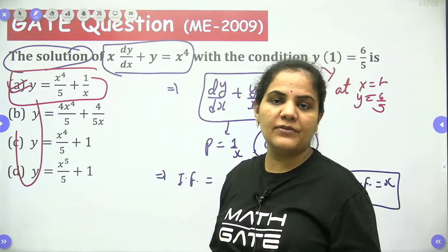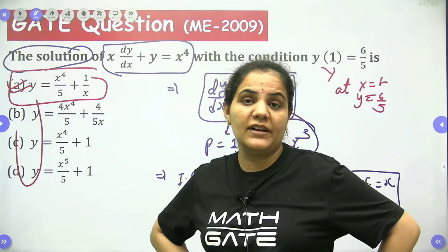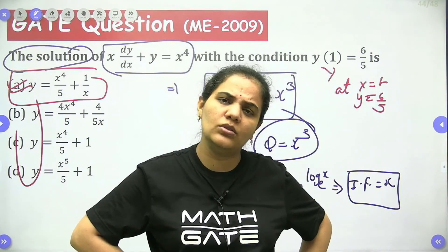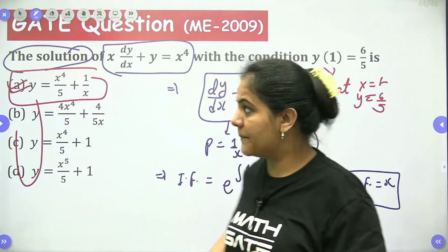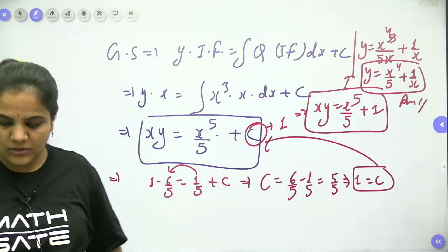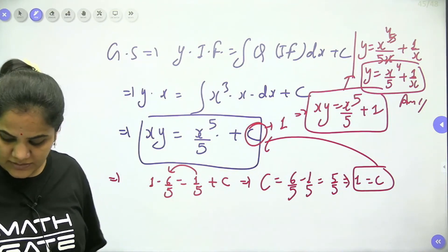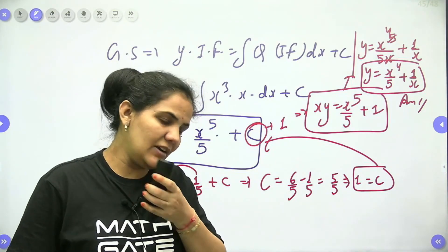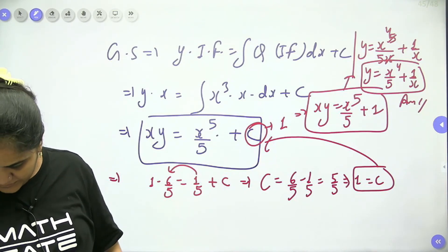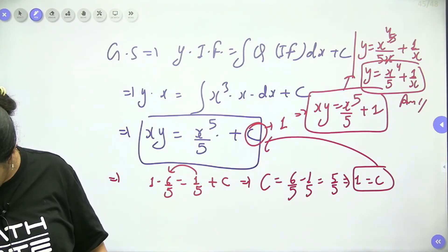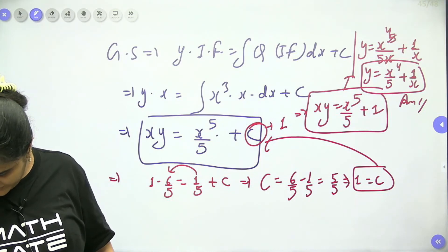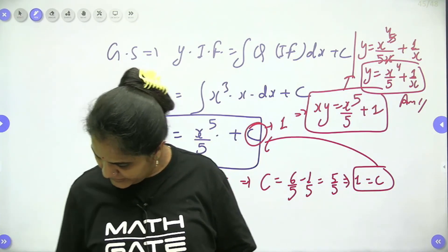I think you are feeling comfortable with linear and non-linear forms. The differential equation is an easily scorable topic — you can score without difficulty. There is no question from Bernoulli's in GATE, even in 2018-19. So let's just leave it.